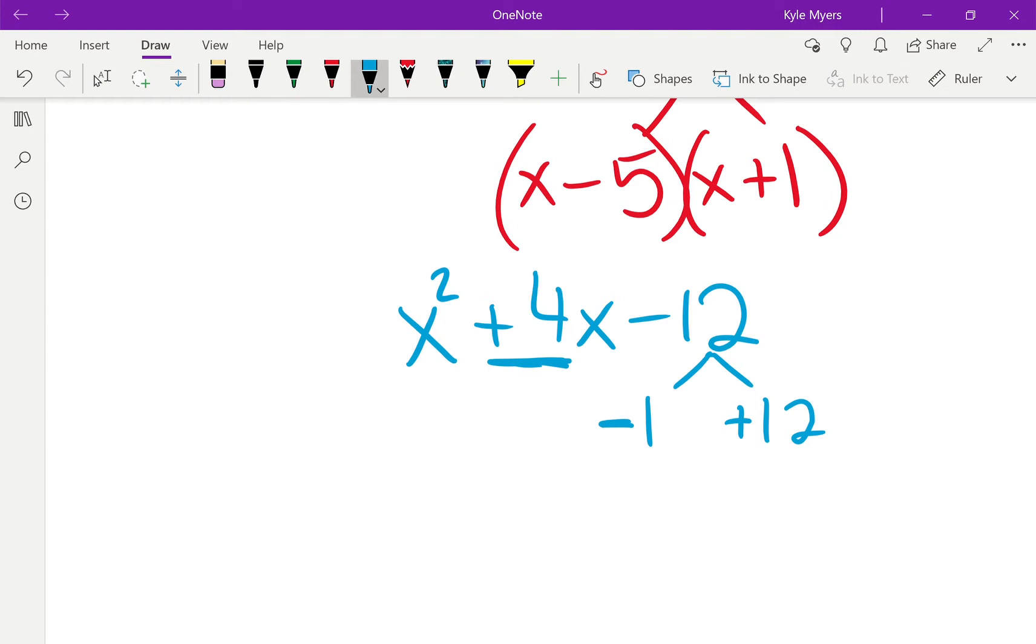Now, if I add them, or in this case, subtract, then negative 1 plus 12 gives me 11, right? Not 4. But it does give me a positive number. So, it's good that I'm making the smaller number the negative one.